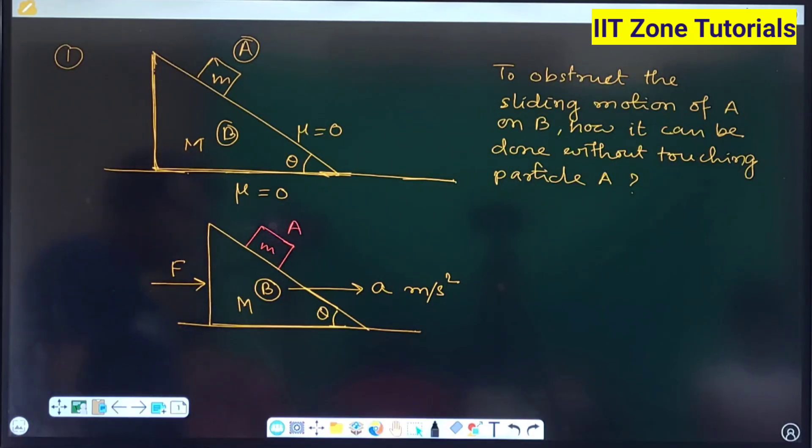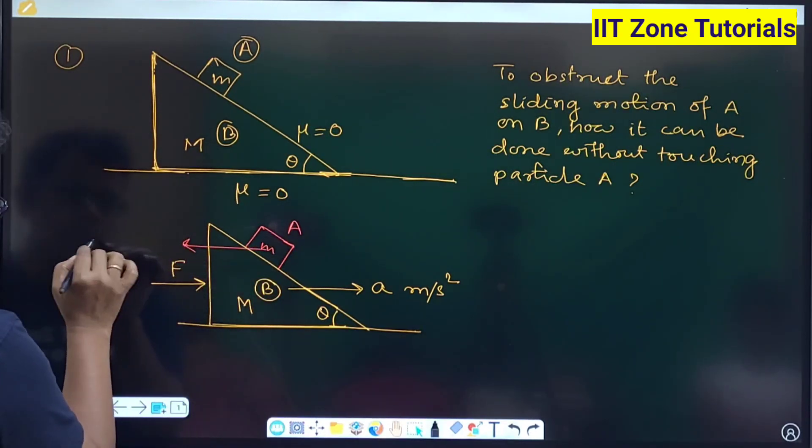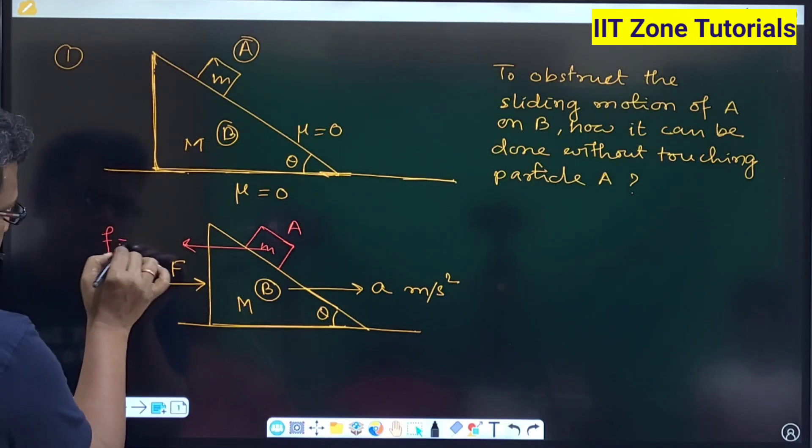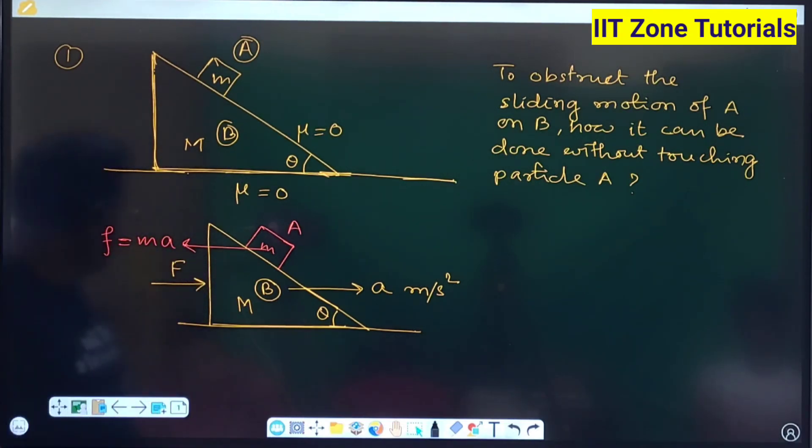receive pseudo force and this will be the pseudo force, right. So this will be suppose small f pseudo force that we can write down M into A. This is the basic idea as soon as we will apply unbalanced force on